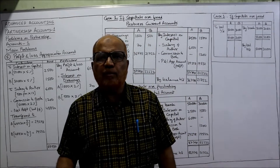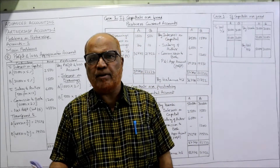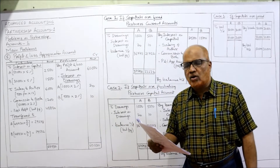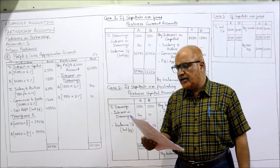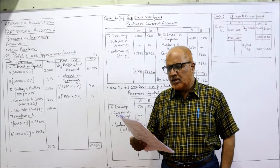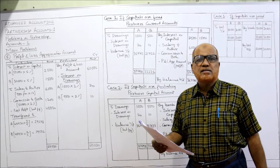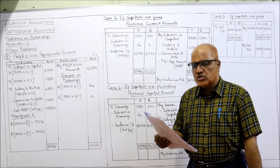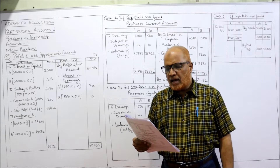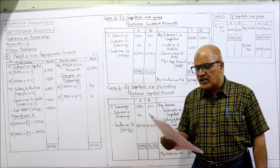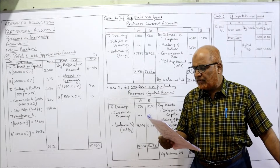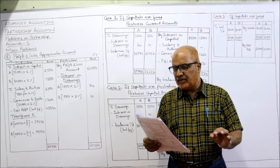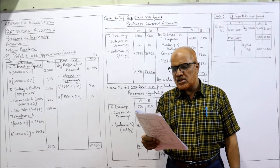Now see problem number five. On 1st January 2005, Mr. Author and Mr. Book entered into a partnership on the following terms. Two partners are there - Mr. Author and Mr. Book started the business on 1st January. The terms are: Mr. Author and Mr. Book are to contribute capital of 50,000 and 30,000 respectively.